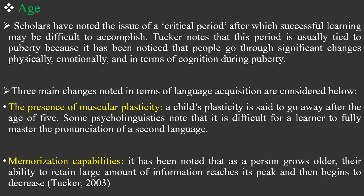Another change is what is called memorization capacity — another element within the age factor. It has been noted that as a person grows older, their ability to retain large amounts of information reaches its peak and then begins to decrease. This is again Tucker 2003. Your capacity to memorize language decreases as you grow up. When you are a child, your mind is still fresh and can retain a large amount of information, but as you grow up, you start to forget a lot.